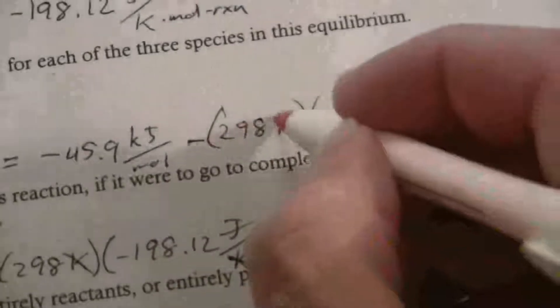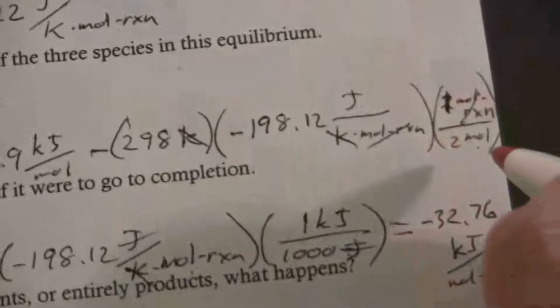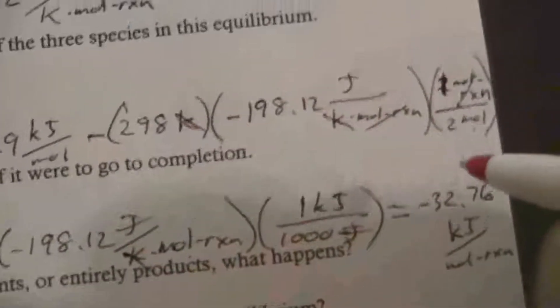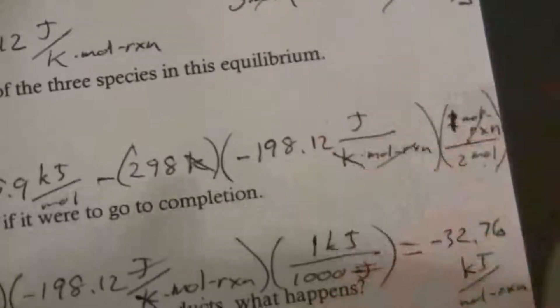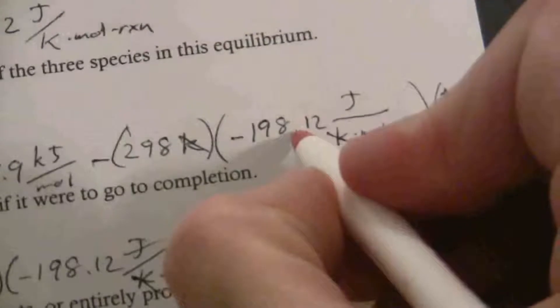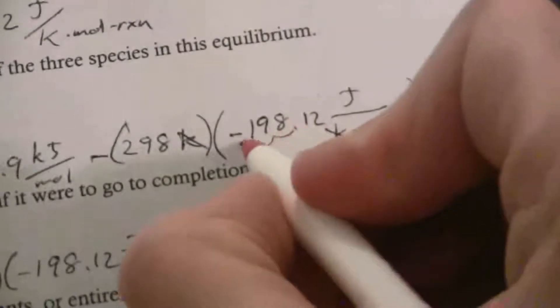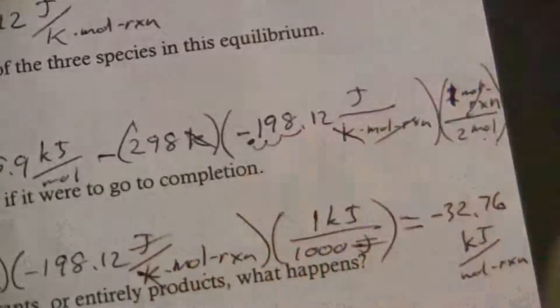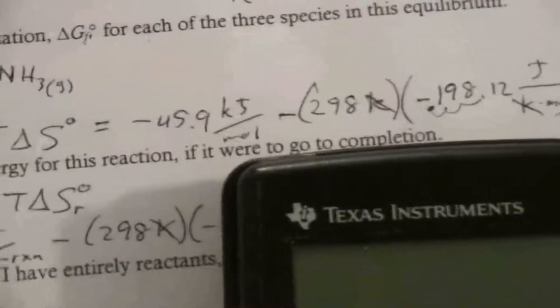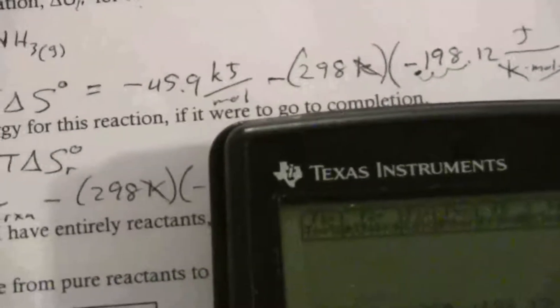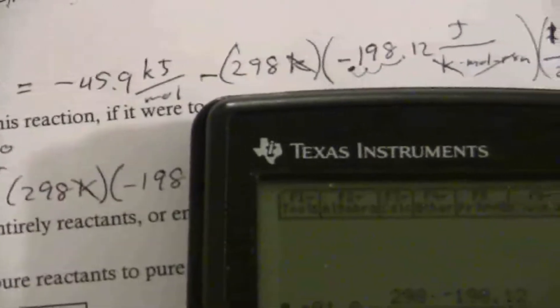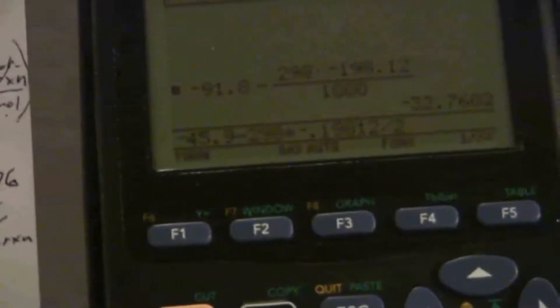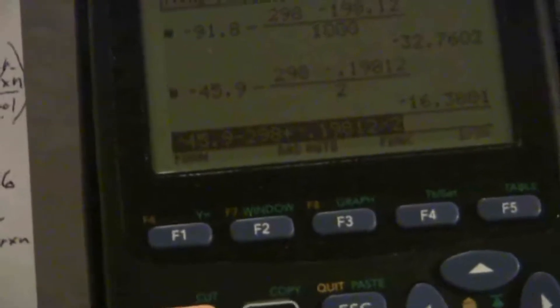My Kelvin will cancel. So here I have joules per mole, and here I have kilojoules per mole. So once again, I need to take that into account. So I'm going to divide by a thousand, just like I did before. This will be negative 0.19812. So let me calculate this out. What I end up with here is I have negative 45.9 minus 298 times negative 0.19812, and then divided by two, and I have negative 16.38.